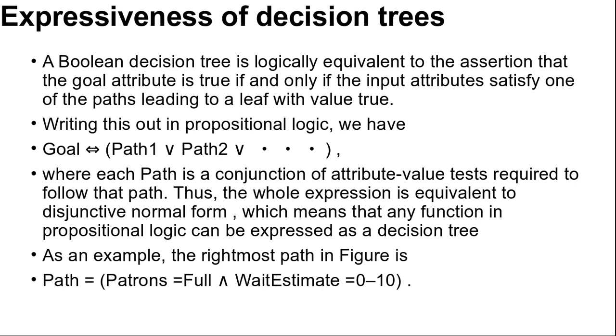But some functions cannot be represented concisely. For example, the majority function, which returns true if and only if more than half of the inputs are true, requires an exponentially large decision tree. In other words, decision trees are good for some kinds of functions and bad for others.